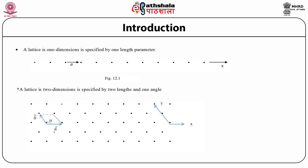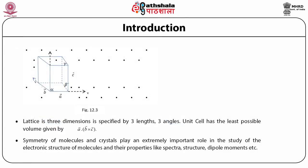A lattice in two dimensions is an arrangement of molecules in a two-dimensional plane, specified by two lengths and one angle. As shown in the slide, the molecules are arranged such that the lattice is specified by two vectors A and B and an angle Alpha between them. A lattice in three dimensions is specified by three lengths and three angles, and the unit cell is defined as the cell with the least possible volume, given by the scalar triple product A dot (B cross C).